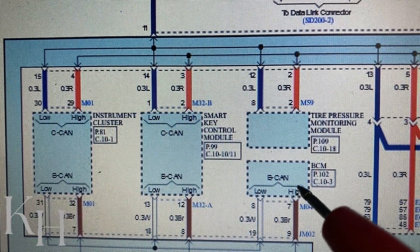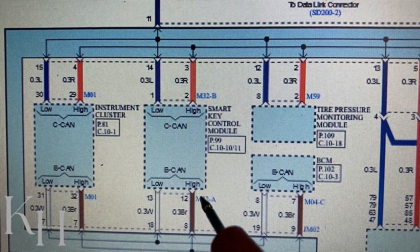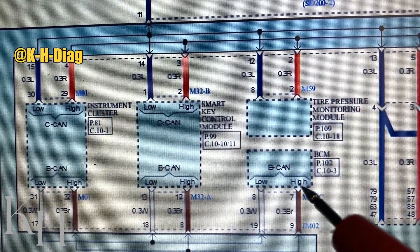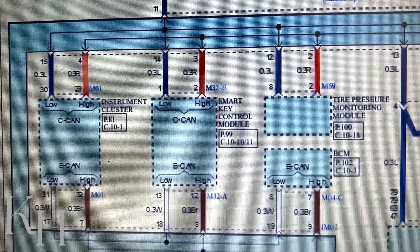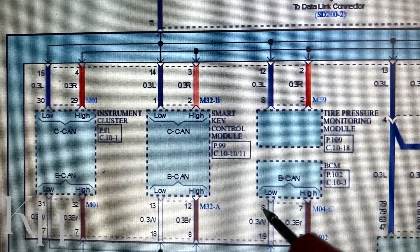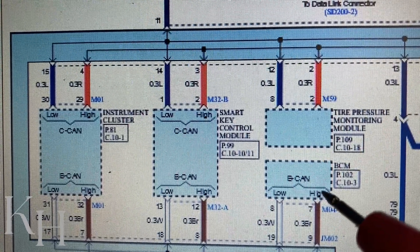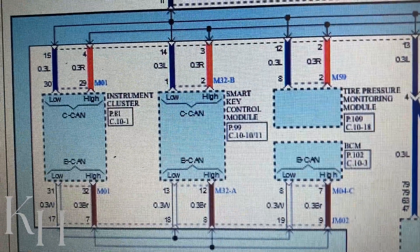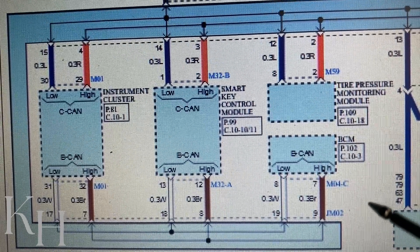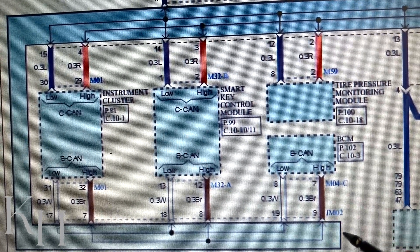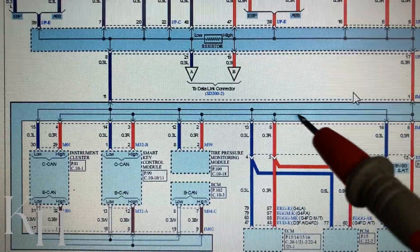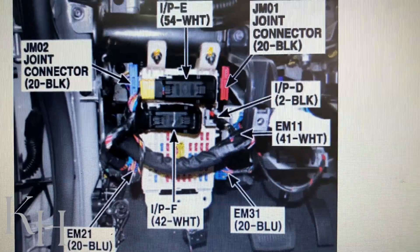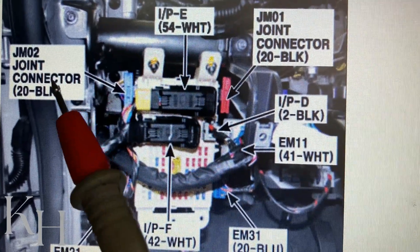On this car we only have BCM and instrument cluster connected to the body CAN, as it doesn't have a smart key control module — only an immobilizer. To find the body CAN you can go to the connector on the BCM or instrument cluster. CAN bus uses a pair of twisted wires — one is CAN high and the other is CAN low — regardless of whether it's high-speed or low-speed. The easiest way is to find the joint connector, where all CAN bus high and CAN low wires connect to each other. This joint connector is JM02.